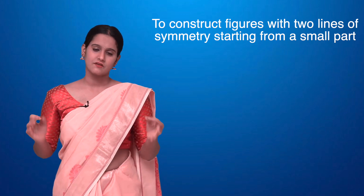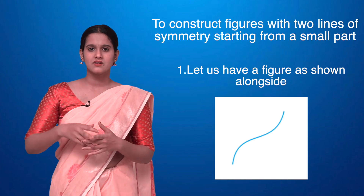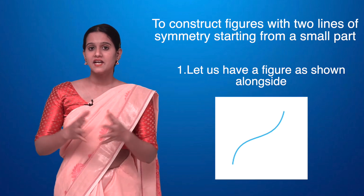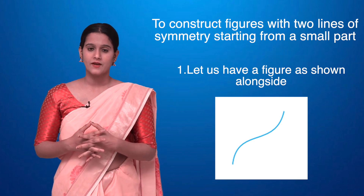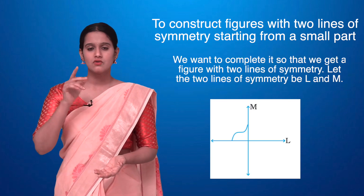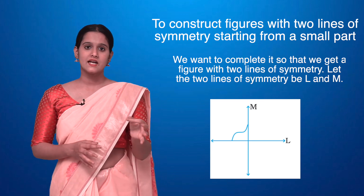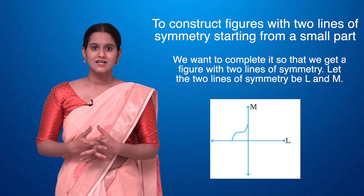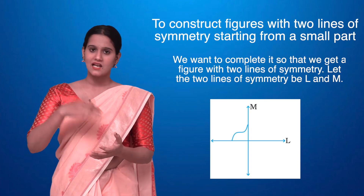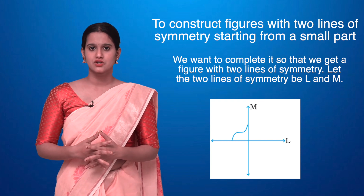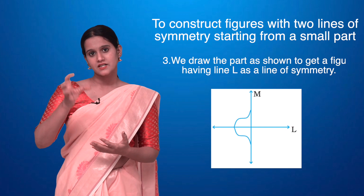Now let's construct a figure with two lines of symmetry, starting from a small part. There is a curve, and we want to build a complete figure from it. I'll draw two lines of symmetry — one horizontal line L and one vertical line M. This curve lies along both the L and M lines. First, I'll take the mirror image of the curve along the horizontal line L.